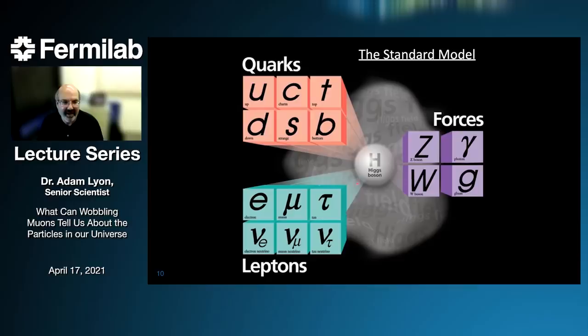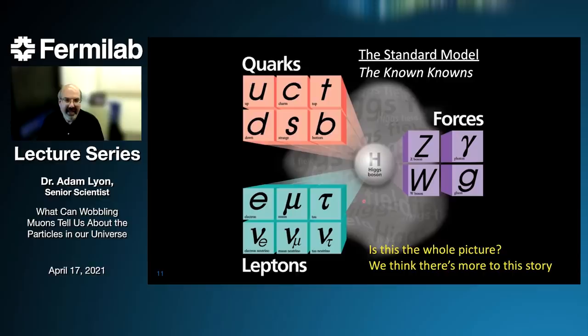The Higgs boson completes the picture of the standard model. It's involved in giving mass to particles in the standard model. This picture of the standard model has been tested with literally thousands of analyses, all these particles exist and we study them. But we have this notion that we want to ask: is this the whole picture? Is there more to the story? And we think this is not the whole picture — there must be more.